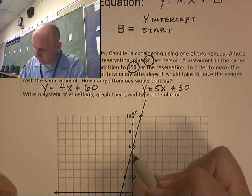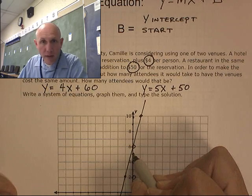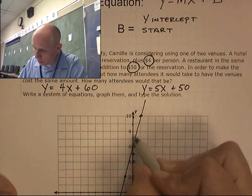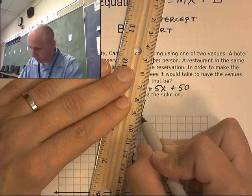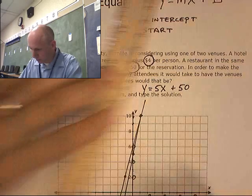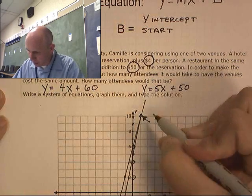My second one starts at 50 right here, and it goes up 5 over 1. So, it's coming together right about there.